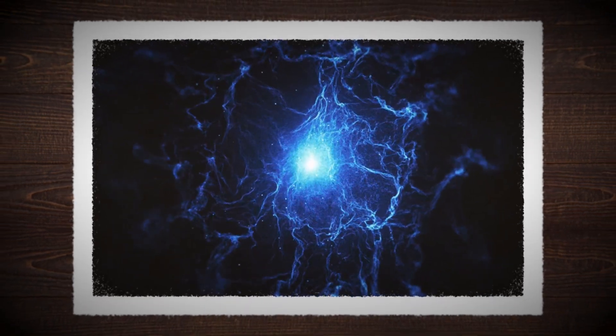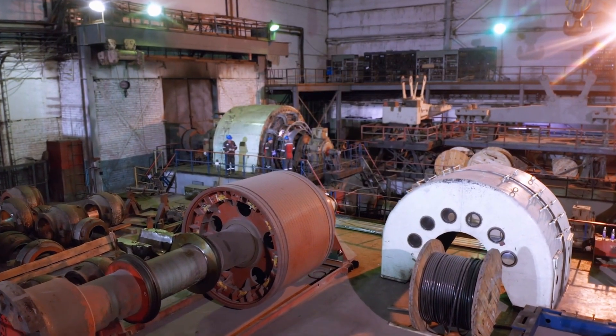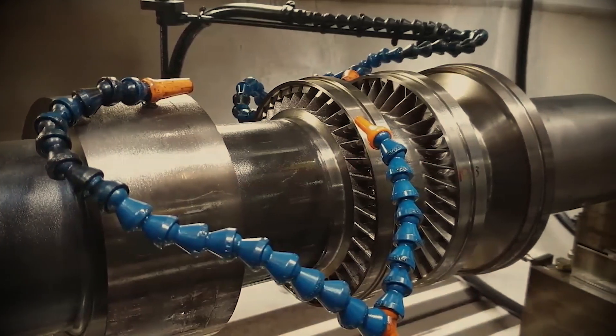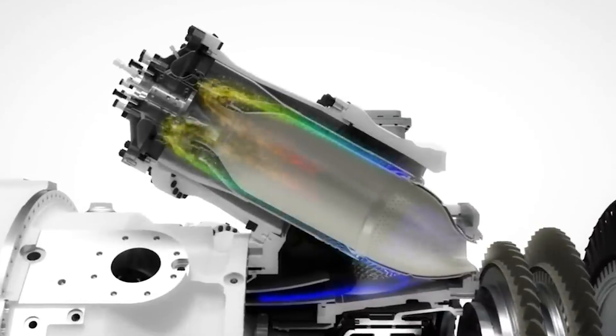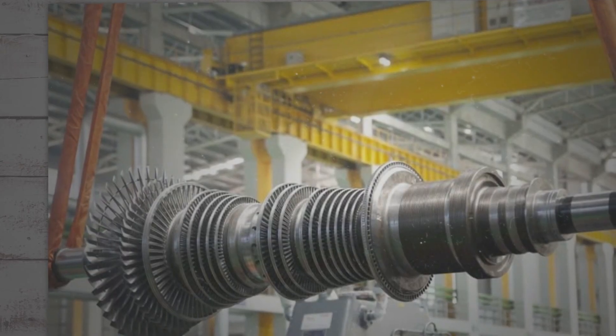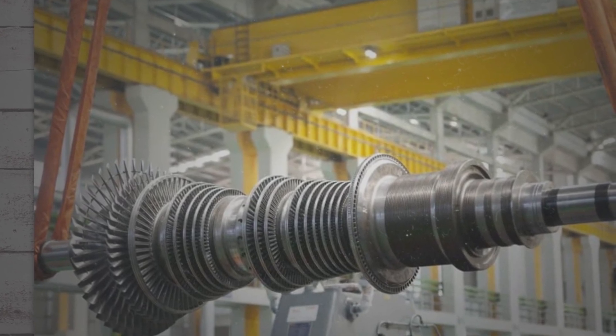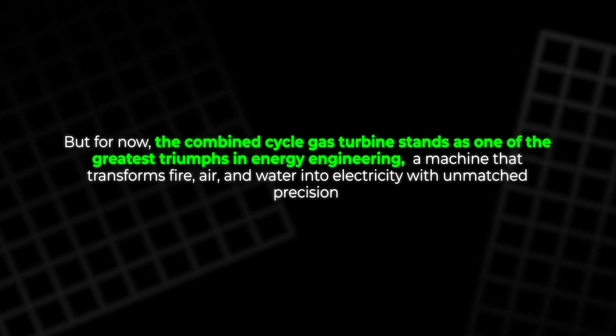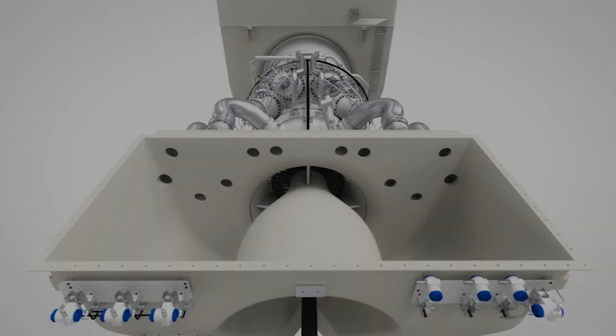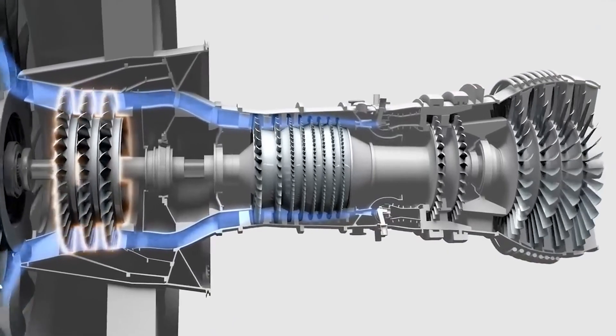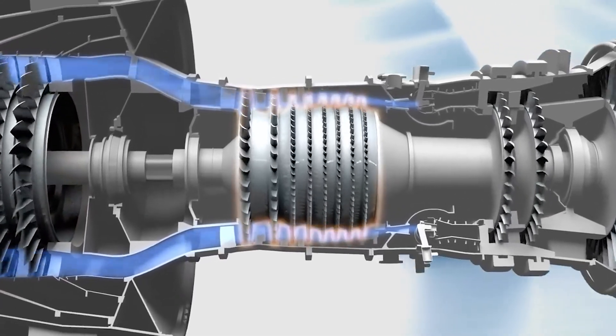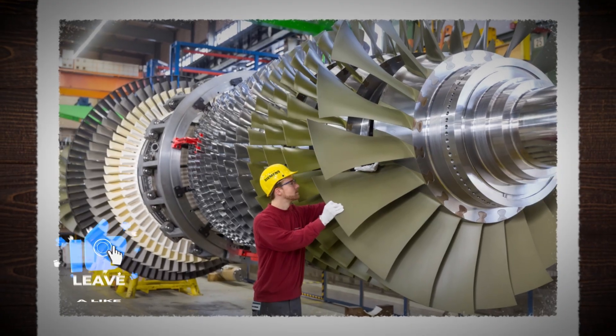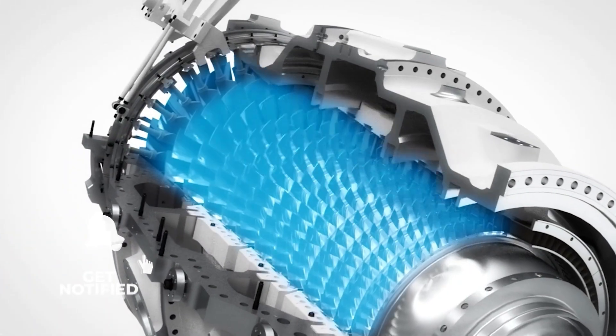Ultimately, every form of power generation represents a balance between efficiency, cost, sustainability, and scalability. The combined cycle turbine demonstrates what's possible when engineering maximizes every stage of energy conversion. It takes what was once waste heat and turns it into valuable power, pushing the boundaries of thermodynamics. Fusion may someday surpass it. Supercritical CO2 turbines might one day redefine efficiency. But for now, the combined cycle gas turbine stands as one of the greatest triumphs in energy engineering, a machine that transforms fire, air, and water into electricity with unmatched precision. And the question remains: what will come next? Will humanity finally master fusion, or continue perfecting the turbine until it reaches its ultimate limit? For now, the combined cycle gas turbine remains our best answer: efficient, powerful, and brilliantly engineered.